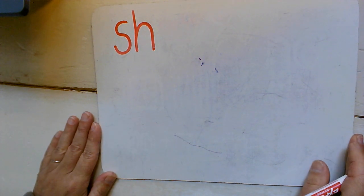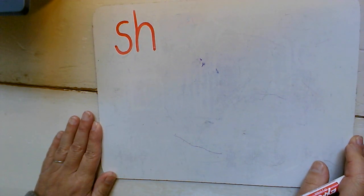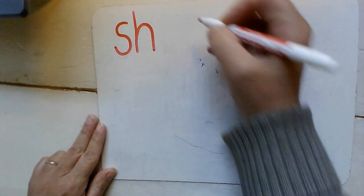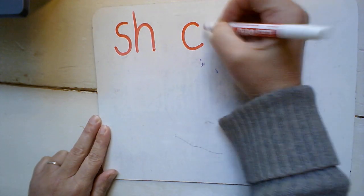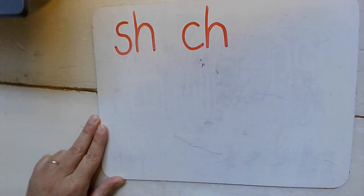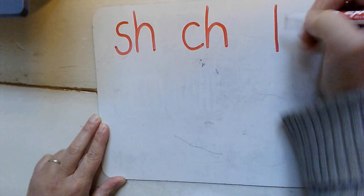Hi, we are practicing digraphs. Remember digraphs are when two letters go together to make a new sound. I'm gonna put them up here and as I put them up I want you to practice that sound for me. So what sound does sh make together? Let's do ch. How about th?